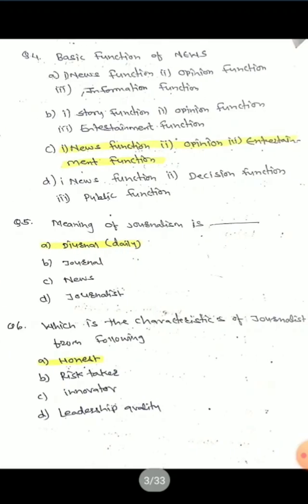Question 4: Basic functions of news. Options are: A) News function, Opinion function, Information function; B) Story function, Opinion function, Entertainment function; C) News function, Opinion function, Entertainment function; D) News function, Decision function, Public function. The correct answer is C — News function, Opinion function, Entertainment function.